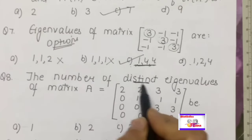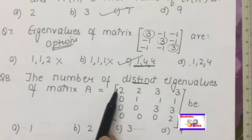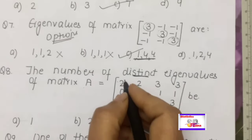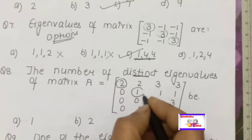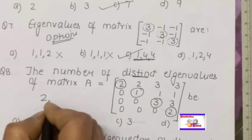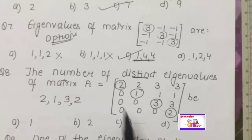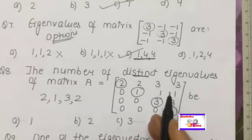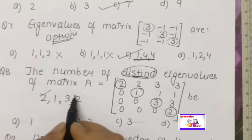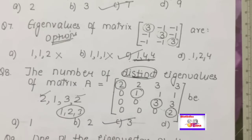Question: Find the number of distinct eigenvalues of a given matrix. First check: it's an upper triangular matrix, so the eigenvalues are the diagonal elements: 2, 1, 3, and 2. The question asks for distinct eigenvalues, so 2 appears twice — the distinct eigenvalues are 1, 2, and 3. Answer: 3.